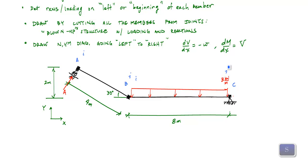I could also do that by just drawing arrows going left to right. What this arrow tells me is that my local coordinate system for each member is essentially going like this. This is how I am establishing my local coordinate system.